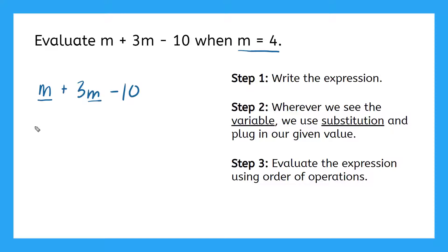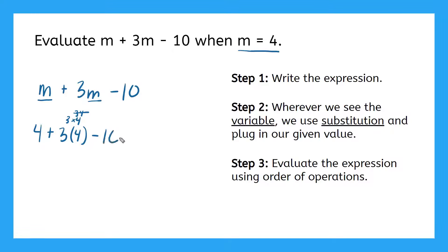After substitution it looks like this: m becomes a 4, plus 3 times 4 — I use parentheses here because this means 3 times 4, not the number 34 — and then I end the expression with minus 10. Now I have all numbers, so I can move to step 3.